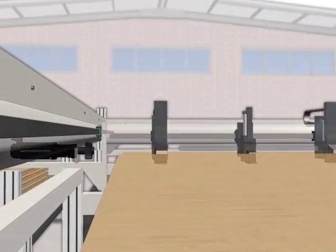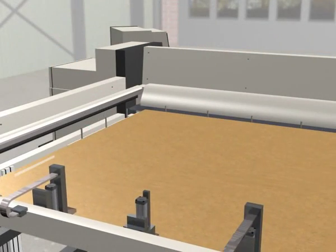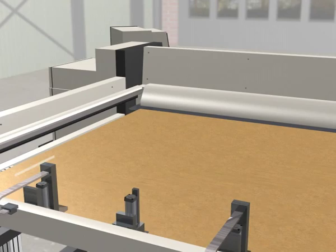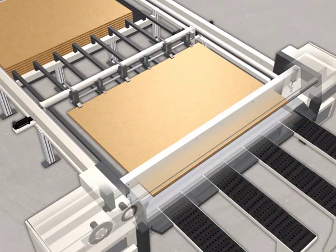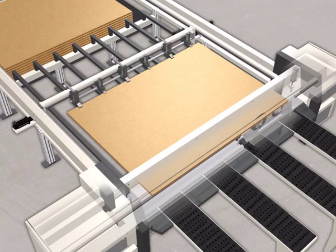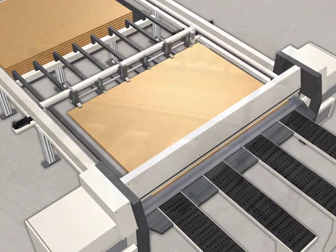Robust, maintenance-free servo motors position the workpiece precisely using ready-to-install linear systems. The sawing carriage is equipped with saw blades, which, with the aid of Rexroth frequency converters, can cut the panels at the correct speed.